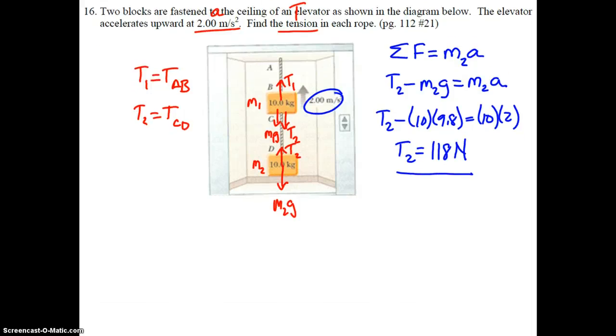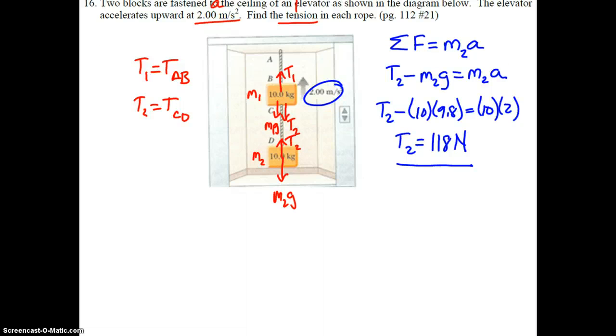Now we need the tension in rope AB. We're going to start that same way. What I'm about to show you is a preference. There are actually a couple ways to solve for this answer. I'm going to show you the way that's preferred by solving it for the whole system.